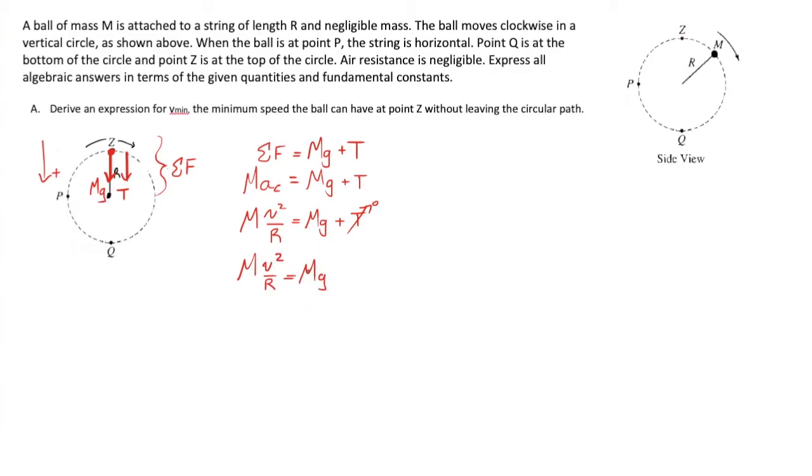We find mv squared over r equals mg. We have m's on both sides which we may cancel. Cross multiply to say v squared equals gr, and we get the classic result by taking the square root: v_min equals square root of gr. A very classic result and setup for a centripetal motion problem.